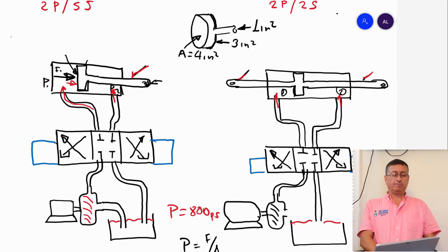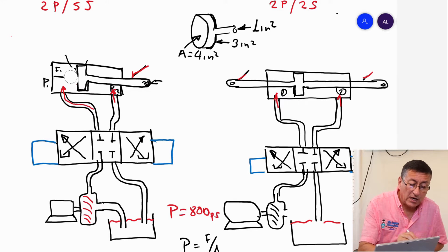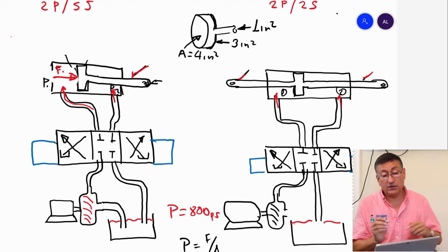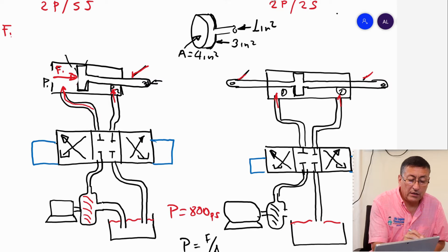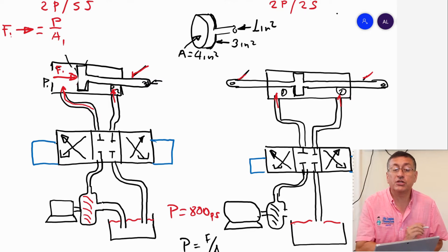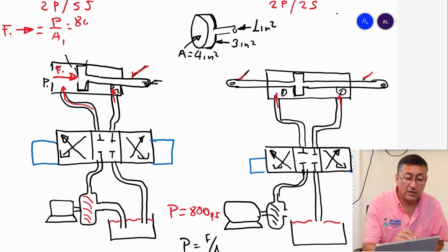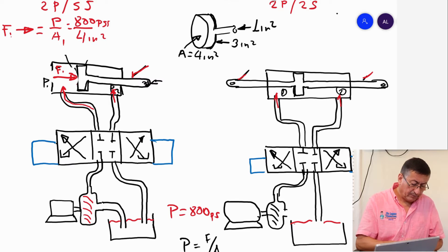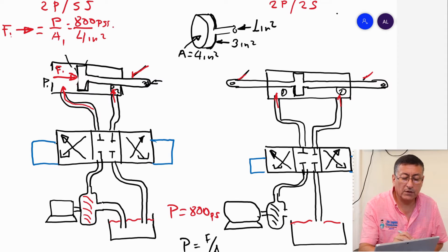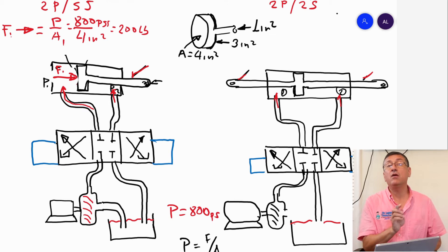We are going to analyze how much force is produced. When the fluid enters on the full-bore side, it produces Force Number One — in this direction. Force Number One equals the pressure multiplied by Area One: 800 psi times four square inches, which gives us 200 pounds in this direction.